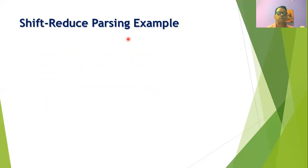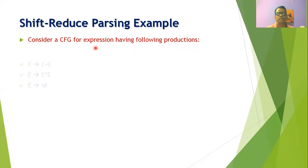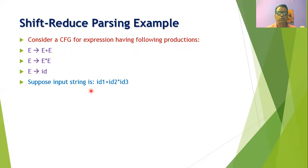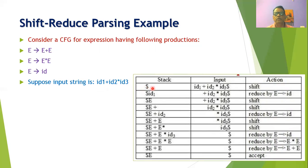Now let us see how shift reduce parsing works with a suitable example. We consider a simple context-free grammar for expressions consisting of three production rules: E is defined as E plus E, E is defined as E star E, and E is defined as ID. The input string is ID1 plus ID2 star ID3. Initially the stack has a dollar sign and the input buffer has ID1 plus ID2 star ID3 followed by dollar. The first action is SHIFT, so ID1 is shifted onto the stack.